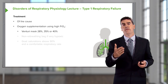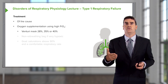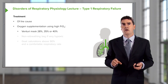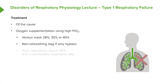We use Venturi masks to deliver controlled oxygen, available at different percentages — 28%, 35%, 40% — using higher concentrations for more hypoxic patients. If patients are very hypoxic, we may use a non-rebreathing bag, which allows an oxygen concentration of about 60% to be inhaled. We aim for saturations above 94% to fully correct the hypoxia. We also want the patient breathing at a comfortable respiratory rate — maintaining 95% saturation while breathing at 40 breaths per minute is not acceptable, as the patient will tire and likely fail to maintain oxygenation.